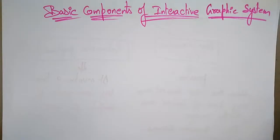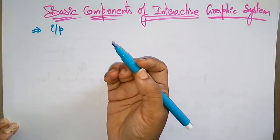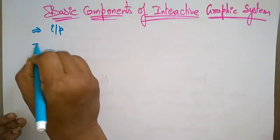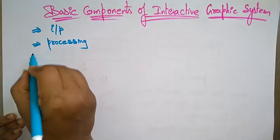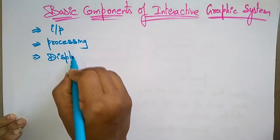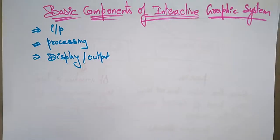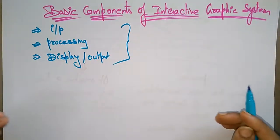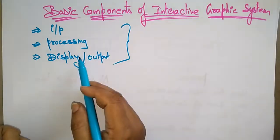Now let's see what are the basic components of the interactive graphics system. The basic components are: input — like mouse, tablet, and multi-touch, etc.; processing, which includes storage; and display, which is the output — like screen, paper-based printers, video recorders. These all come under the basic components of the interactive graphics system, because there should be communication between the user and the computer through input, processing, and output.